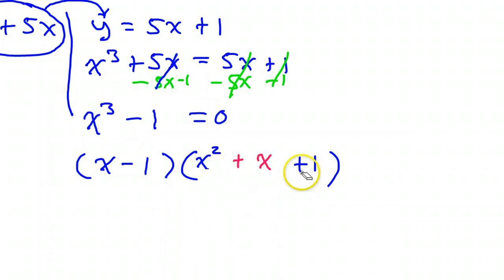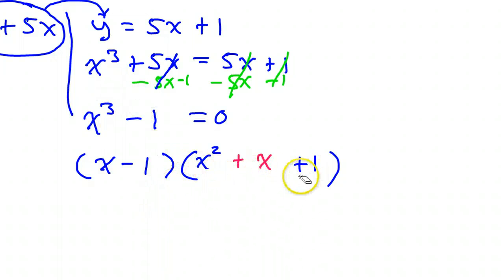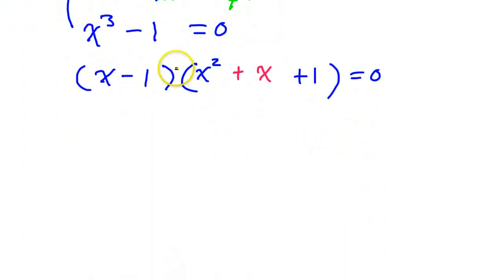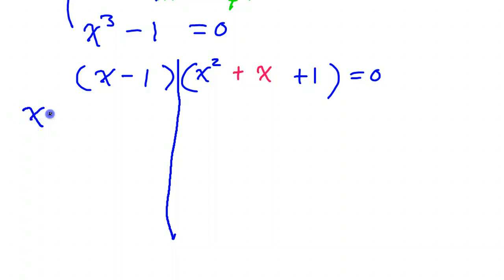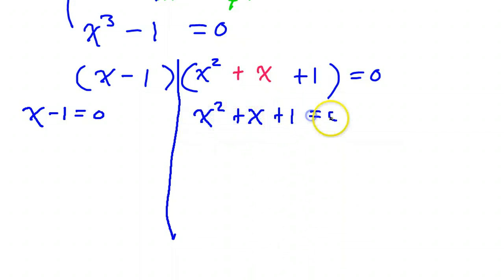This trinomial will never be factorable, so I'm going to have to use the quadratic formula to solve it. Right now I have it factored as (x minus 1)(x squared plus x plus 1) equals zero. I need to set each factor equal to zero. For x minus 1 equals zero, adding 1 to both sides gives me x equals 1.